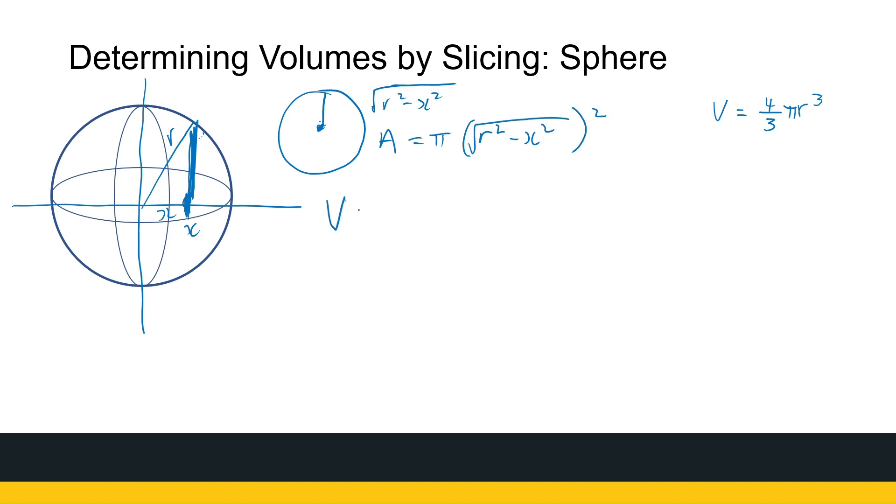So my volume is going to be the integral from minus R to R of pi times the area of the slice, which is pi times root of R squared minus X squared all squared, just gives me R squared minus X squared, dx.